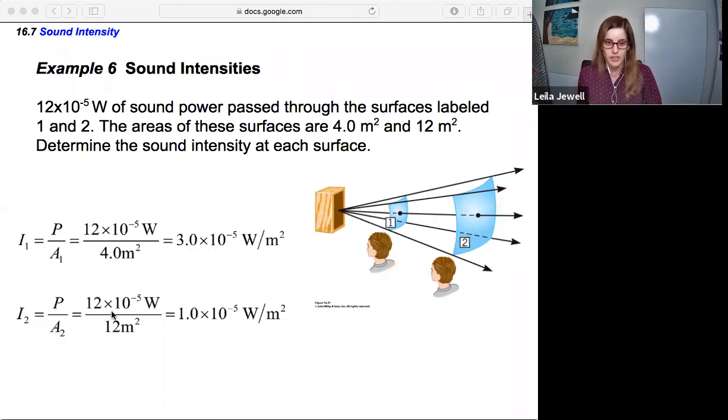For intensity two, it's the same power because they're both the same source. The only thing that's changed is the area, which comes from being further away. The area is three times bigger, so the intensity is three times smaller. You can think of it as the sound is more spread out, so your ear intercepts less of that power.